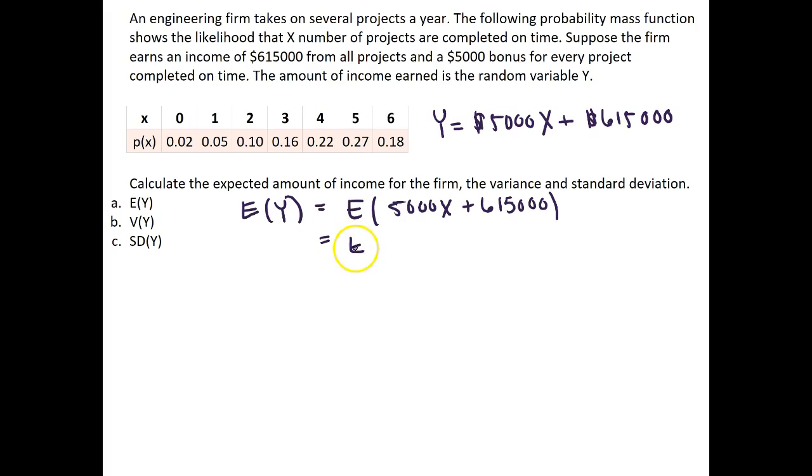So this is equal then to, if we take the 5,000 outside, 5,000 times the expectation of X plus 615,000.